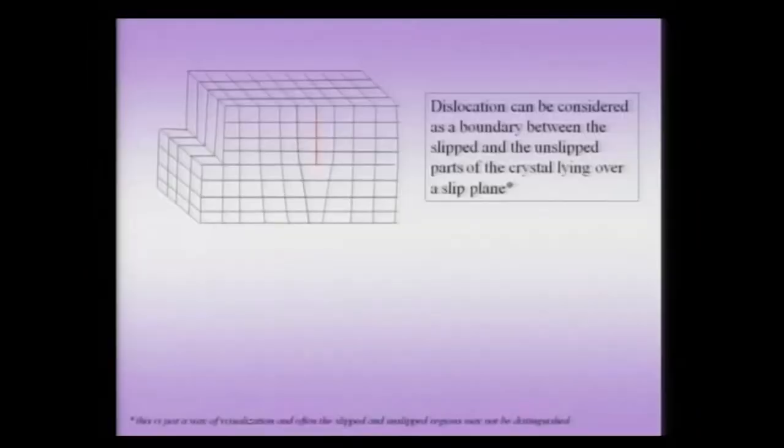Dislocations play a very important role in plastic deformation — they actually weaken the crystal. A dislocation can be visualized as a boundary between a slipped and unslipped part of a crystal lying over a slip plane.